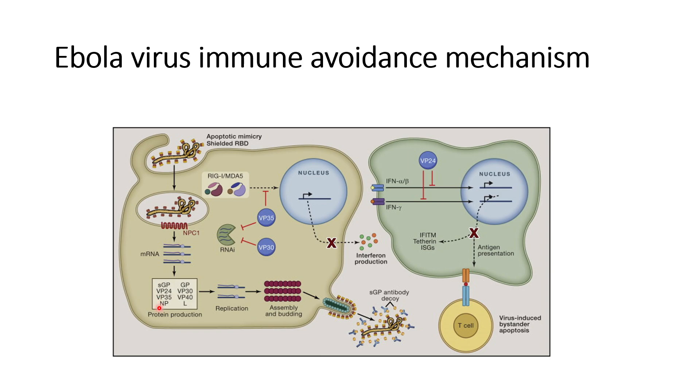sGP, VP24, VP35, NP, GP, VP30, and VP40. These genes help in suppression of the immune system.